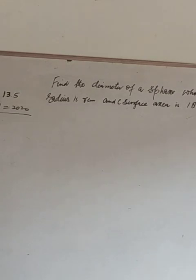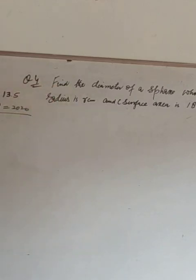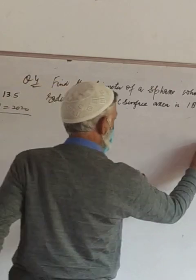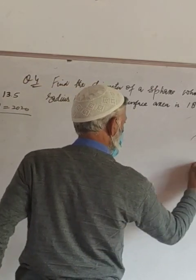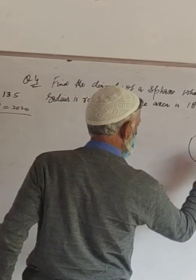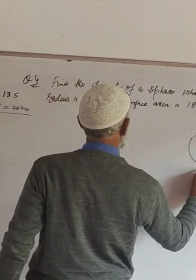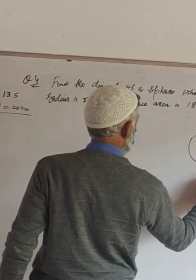Question number four. Find the diameter of a sphere whose radius is half centimeter and the curved surface area is 184 centimeter square.